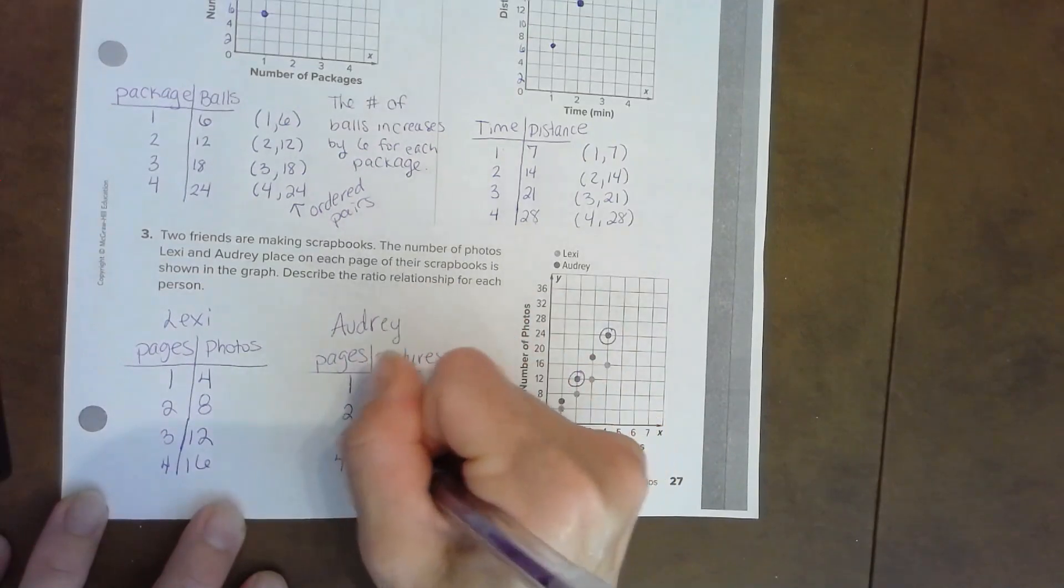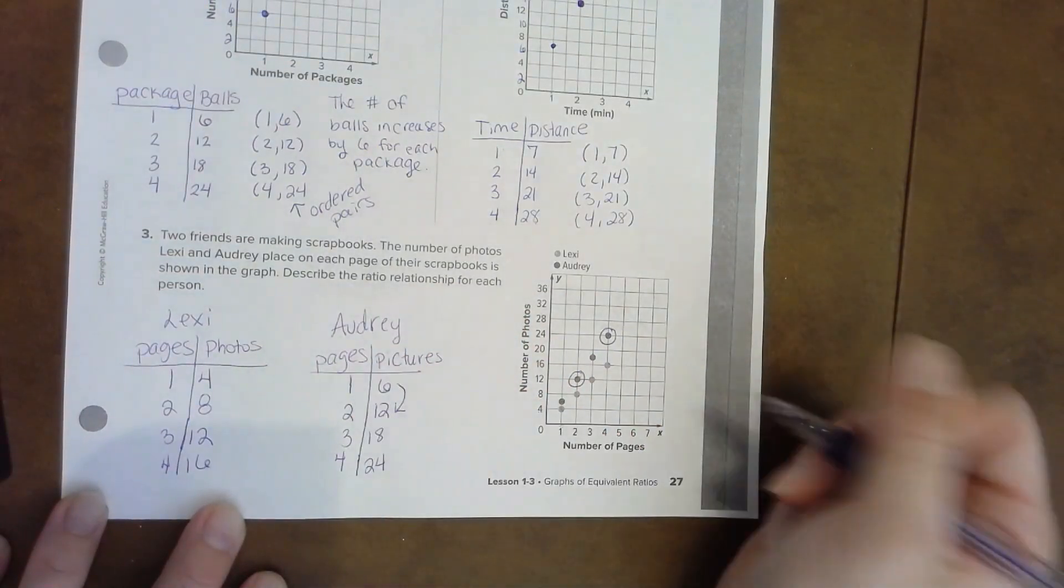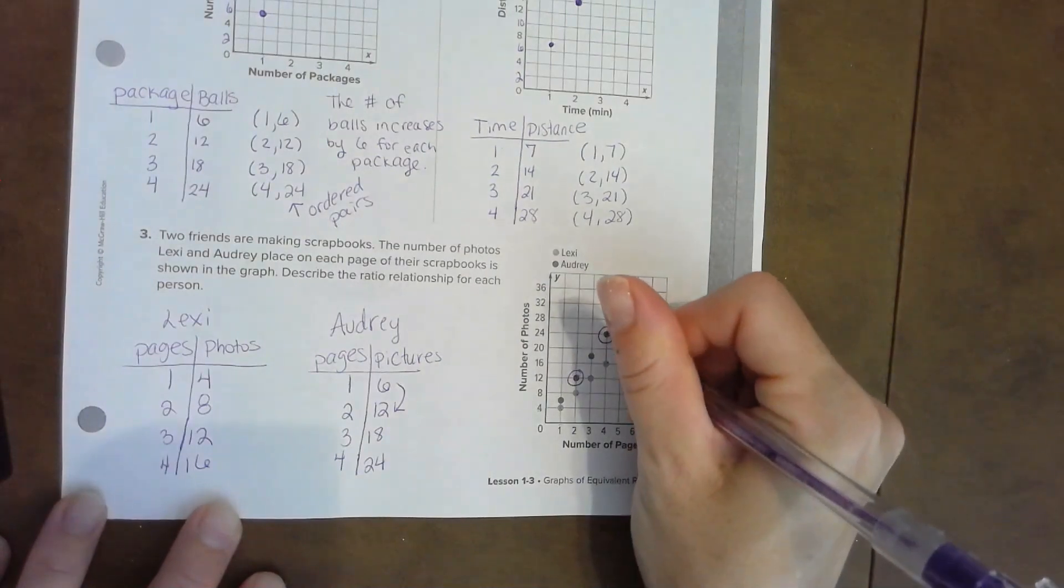You can look at the ones that are exactly on the intersecting lines: six, twelve, eighteen, and then twenty-four. Double-check, I can go over to four—yep, right up to twenty-four.